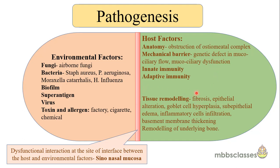Tissue remodeling plays a significant role, especially when the inflammatory process persists for a long period. This leads to fibrosis, epithelial alteration, goblet cell hyperplasia, sub-epithelial edema, inflammatory cell infiltrate, and basement membrane thickening. All these can facilitate progression of chronic rhinosinusitis. If the disease persists for a long time, remodeling of the underlying bone can also occur. In summary, chronic inflammation requires a dysfunctional interaction between environmental and host factors at the sinonasal mucosal interface.